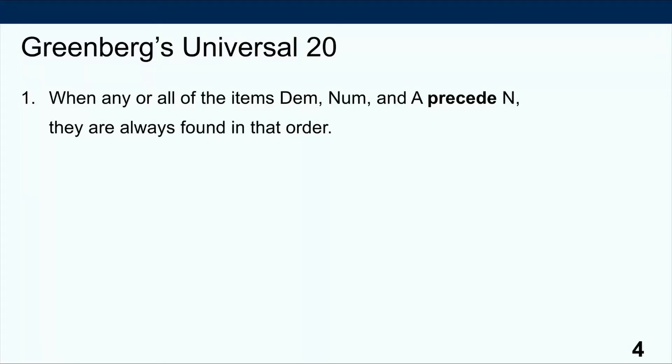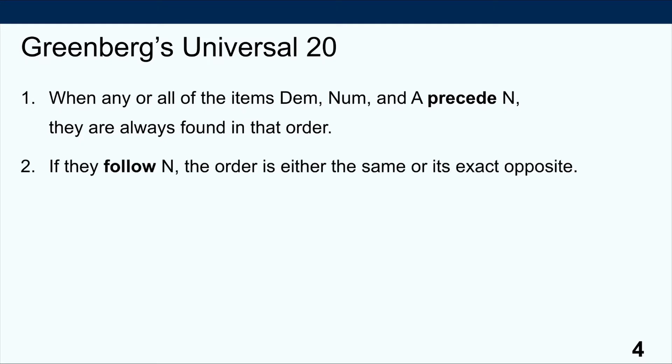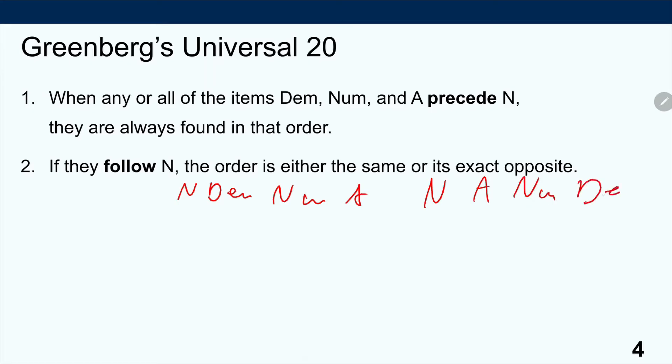Universal 20 is an observation Greenberg came up with by studying a vast sample of the world's languages and the distribution of these various items in those languages. Here is what Universal 20 says very briefly: when any or all of the items demonstrative, numeral, and adjective precede the noun, they are always found in that order — dem, num, adj, noun. However, if they follow the noun, then the order is either the same or its exact opposite: noun-dem-num-adj, or noun-adj-num-dem. Linguists have extensively studied whether only those ordering possibilities exist, and why the orders are so restricted.